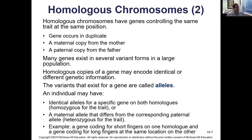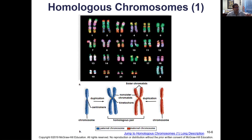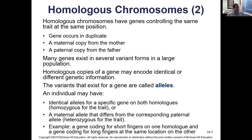Homologous chromosomes are these pairs that contain the same genes. Mom and dad will have different variations of those genes — for example, dad could have brown hair and mother could be a redhead. Those are different alleles. Alleles are various forms of a gene.